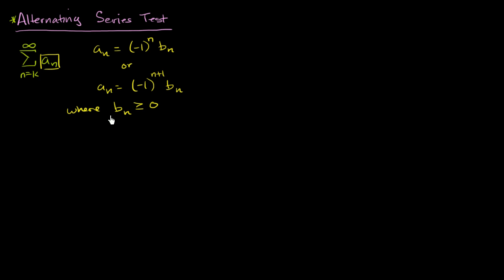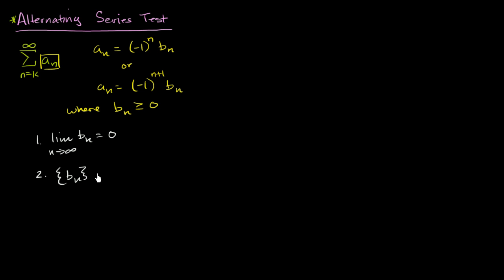If all of these things are true, and we know two more things: number one, the limit as n approaches infinity of b sub n is equal to zero, and number two, b sub n is a decreasing sequence — then that lets us know that the original infinite series is going to converge.